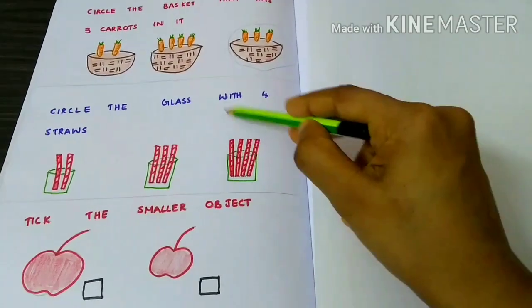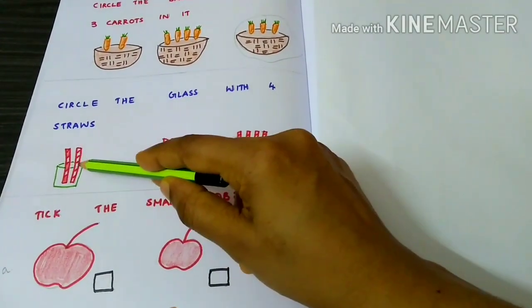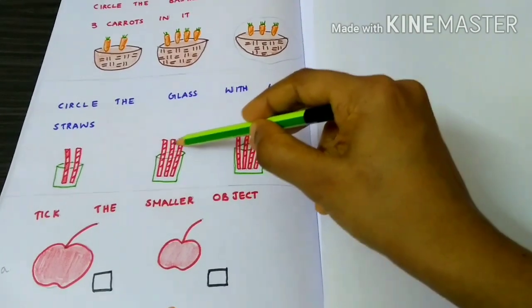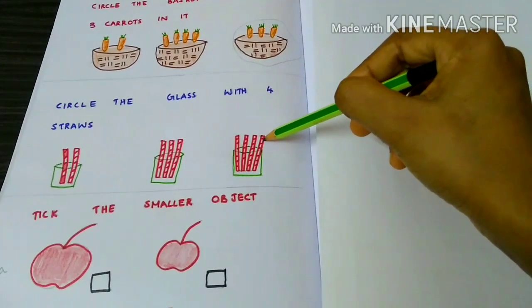Circle the glass with four straws. 1, 2, 1, 2, 3, 1, 2, 3, 4.